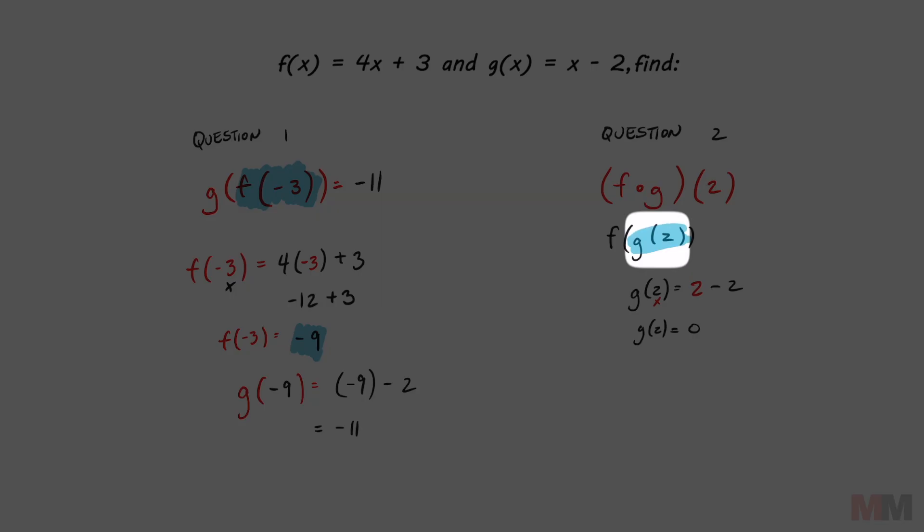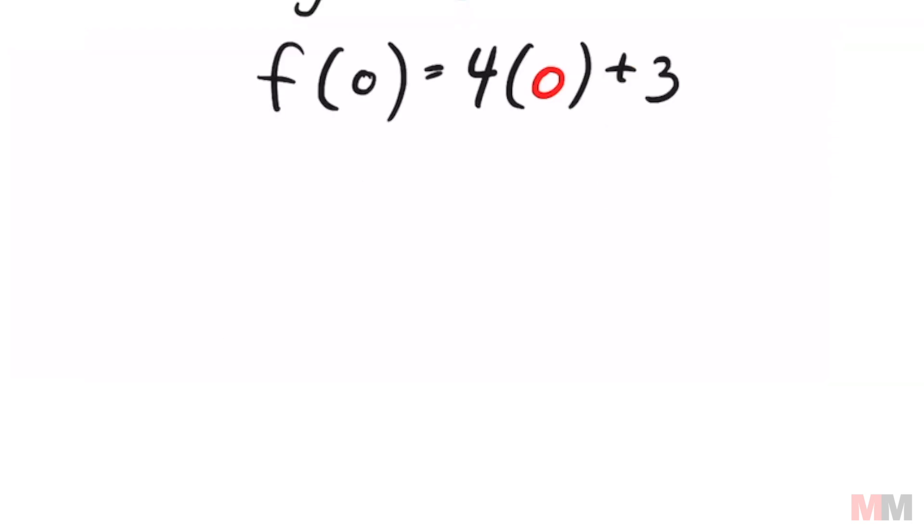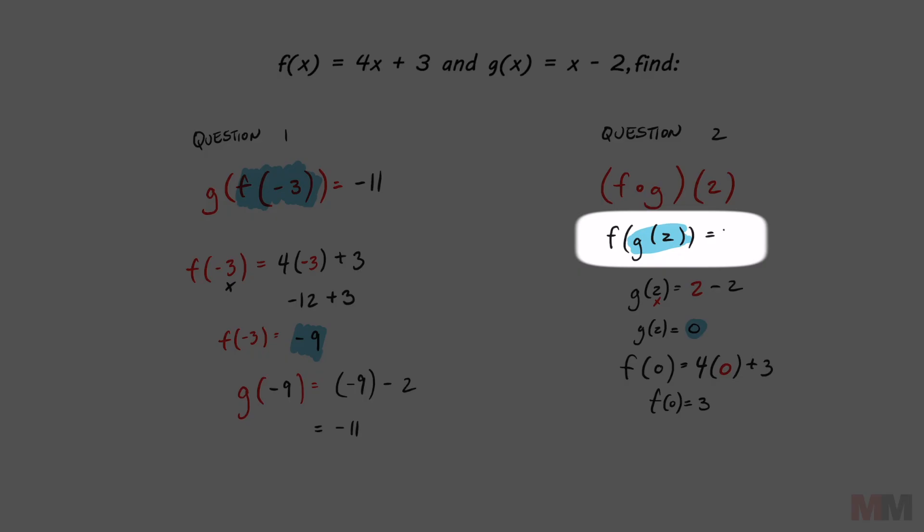Now I know that that blue part equals zero because that's what that says. And just rewrite the question so it's easier for you to understand. F of zero. To compute that, we're going to use the function of f. That's my input. That's going to be my value of x. So that's going to be four times zero plus three. Four times zero is just zero. So this ends up equaling three. So f of g of two equals three.